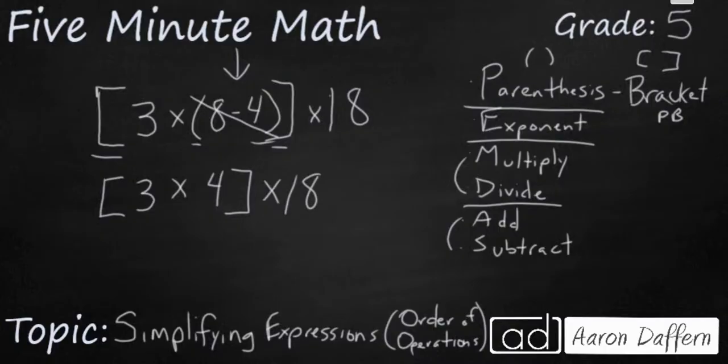So I still am in this first row here. I finished my parentheses. Now I can take care of this bracket. 3 times 4. I'm going to go ahead and simplify that to 12.